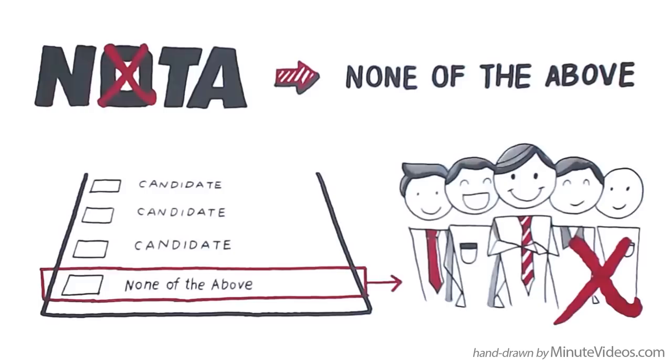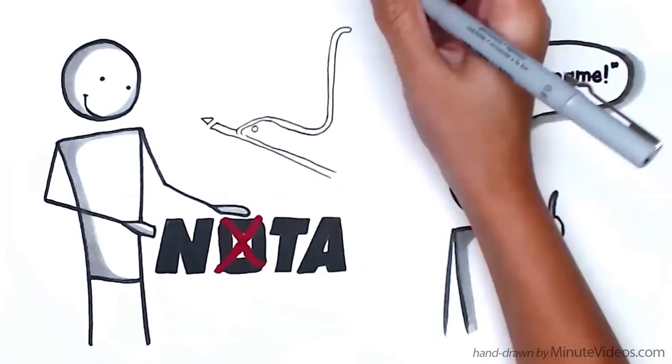Nota is important because it represents the ability to withhold consent – something that is central to the concept of democracy.